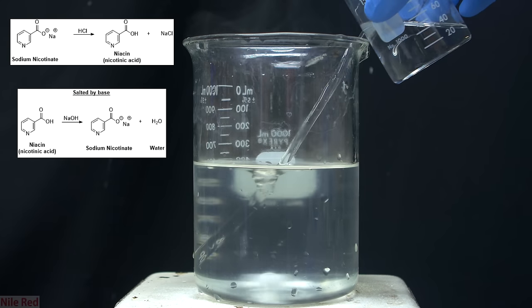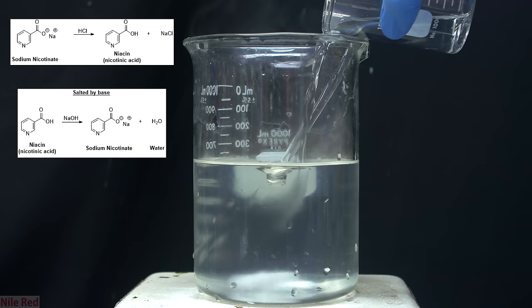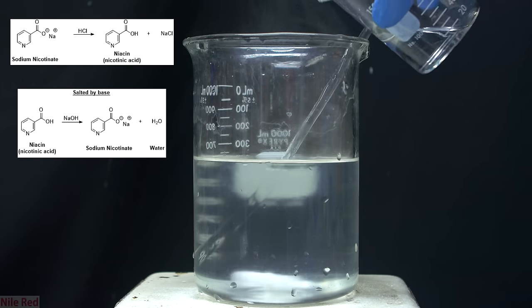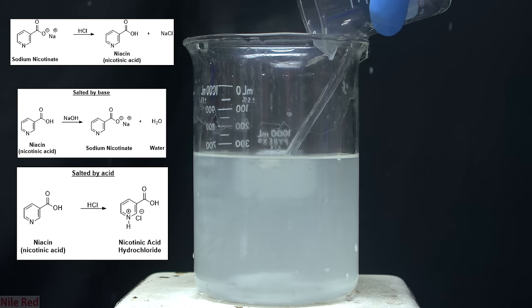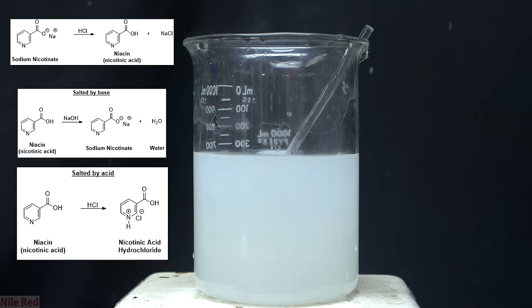Before, we used the carboxylic acid group to react with sodium hydroxide and form a water-soluble salt, but the nitrogen group of the niacin can react with acids and also form a water-soluble salt. Our goal here is to get the pH of the solution to the isoelectric point of niacin.